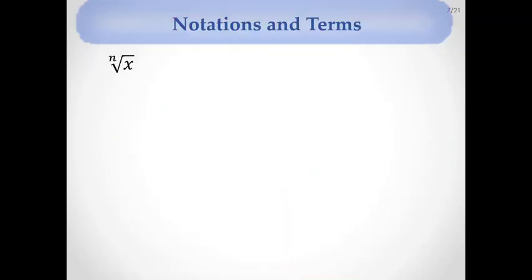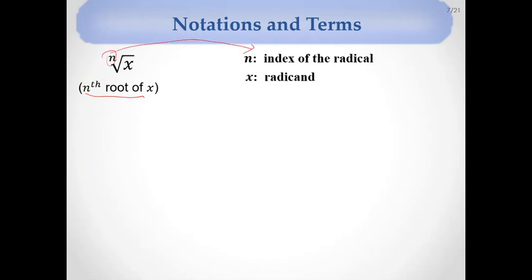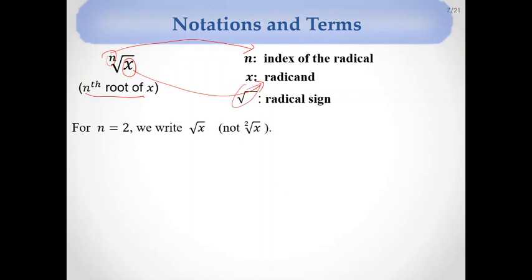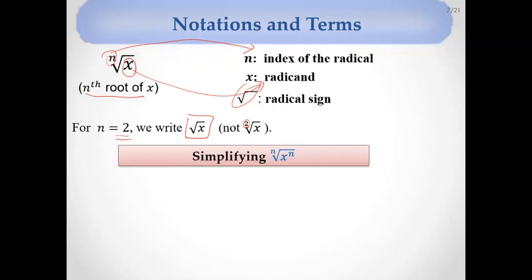Let's review the notation and terms. In the nth root of x, n is called the index of the radical, x is called the radicand, and the symbol is called the radical sign. For the square root, we do not write a 2 for the index, but it is understood to be 2 — the second root of x.